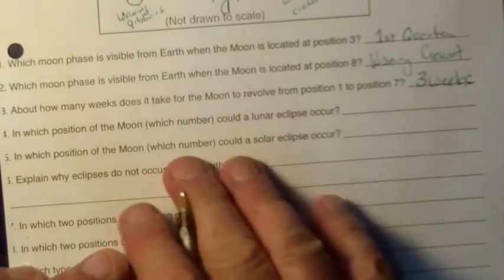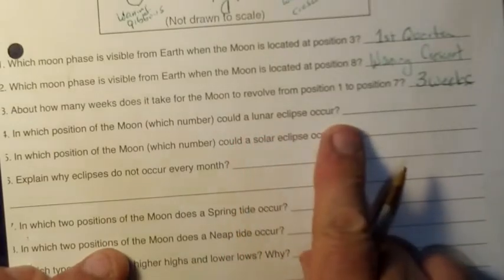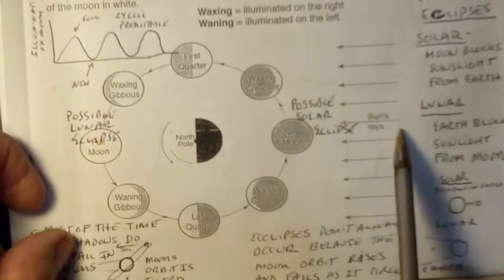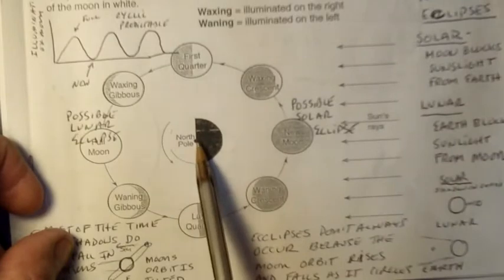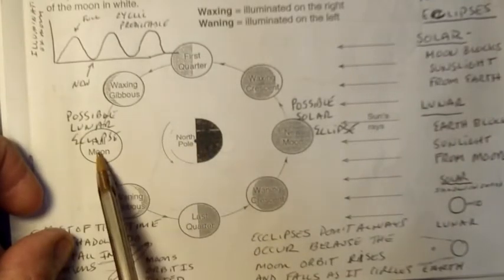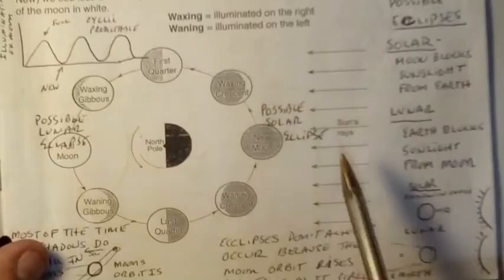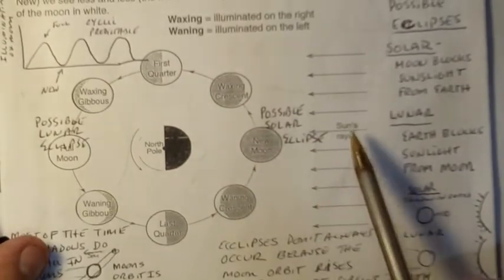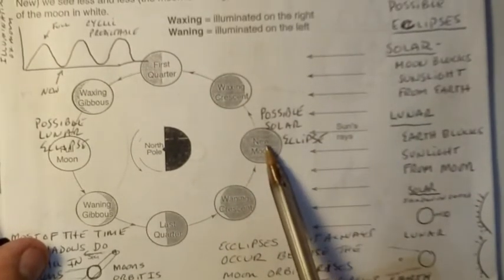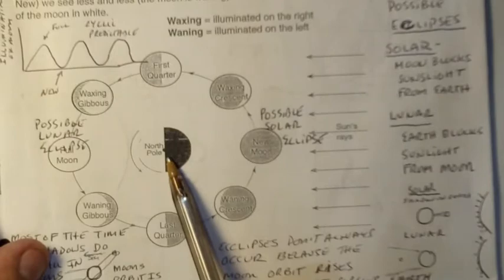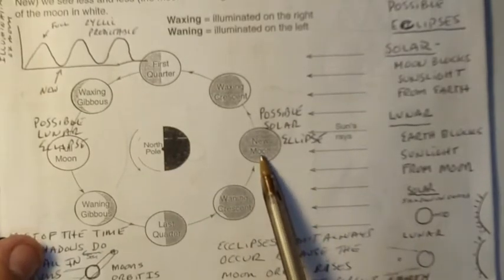Number four, in which position of the moon could a lunar eclipse occur? A lunar eclipse is possible when the sun's rays are blocked out by the earth, casting a shadow on the moon. That can only happen during a full moon phase. Number five, in which position of the moon would a solar eclipse occur? A possible solar eclipse can occur when the sun's rays are blocked out by the moon, casting a shadow on the earth. This can only happen during the new moon phase.